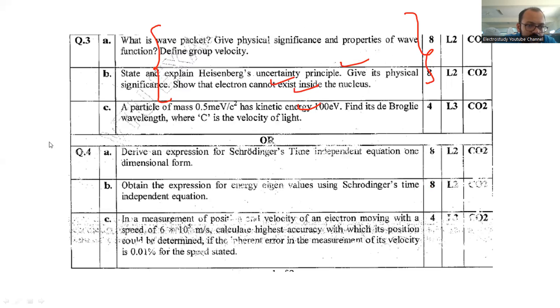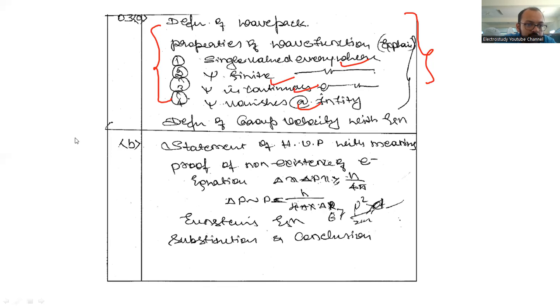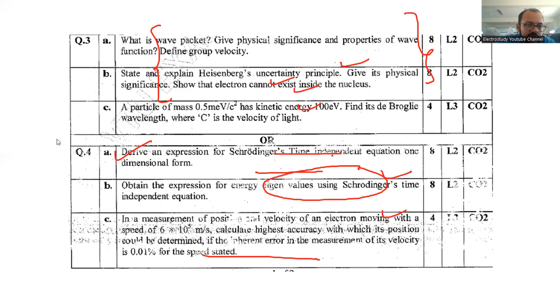Question number 3b: state and explain the Heisenberg uncertainty principle. Give the physical significance so that electron cannot exist inside the nucleus. That you have to prove. This is the most important question. I have seen this question in many examinations. Like a statement is required. Similarly, proof of non-existence of electron in nucleus. This equation you are supposed to prove using this condition, and include substitution as well as conclusion.